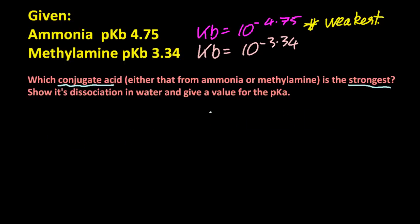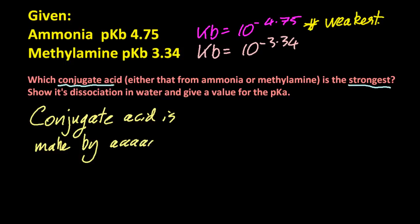So now I have to work out what the conjugate acid of ammonia is. So how I remember, is a conjugate acid is made by adding a proton. That sticks in my head.